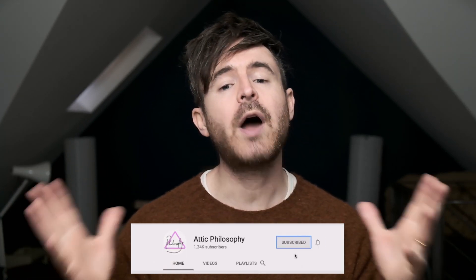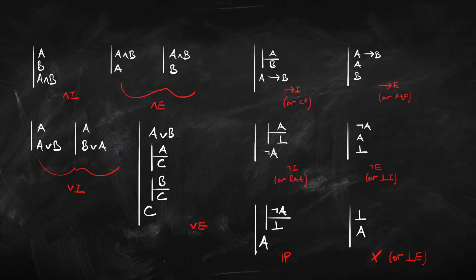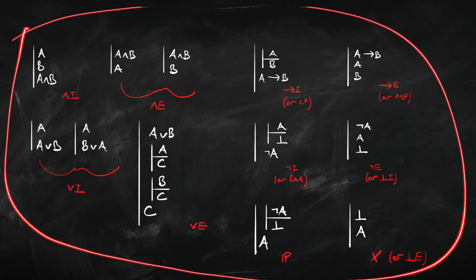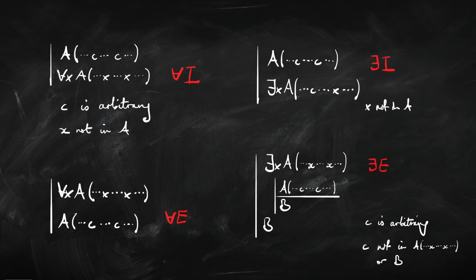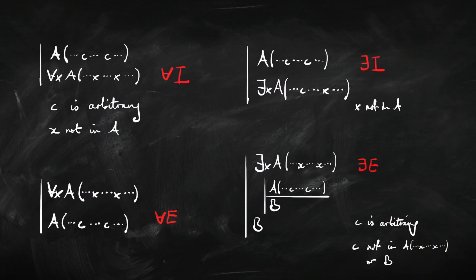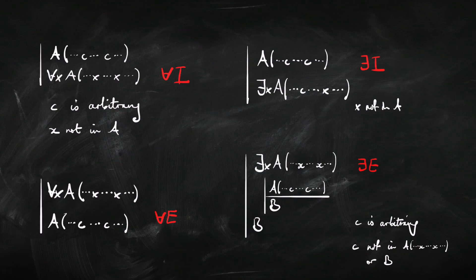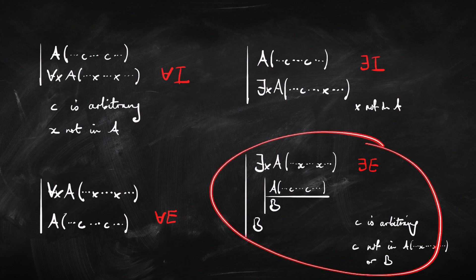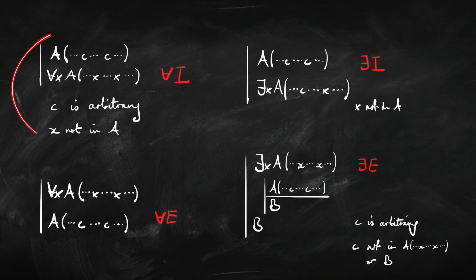If you're finding these videos useful, why not subscribe to the channel? So we have here all the rules from propositional logic, and we have here the four additional rules for the quantifiers. If they don't make any sense, go back to the previous video for the explanation. Now we're going to see how these rules work in practice, focusing on the two rules that are tricky: the introduction rule for the universal quantifier and the elimination rule for the existential quantifier.